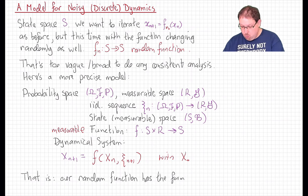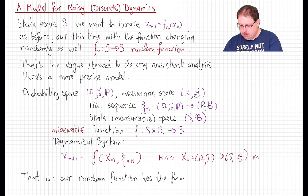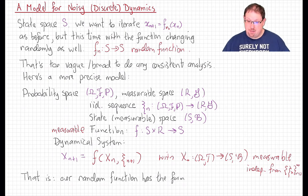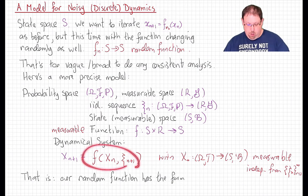With some initial starting point X0, which will also allow to be a random variable, so measurable between those spaces. But let's make it independent from the noise, again, so that the noise is not really affected and does not affect where we start. But it can, of course, affect where we go.